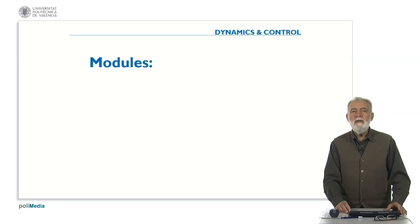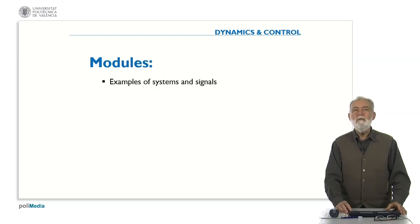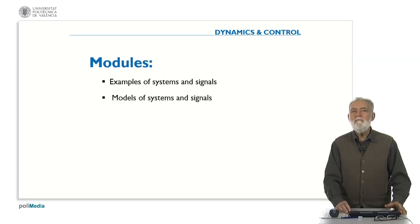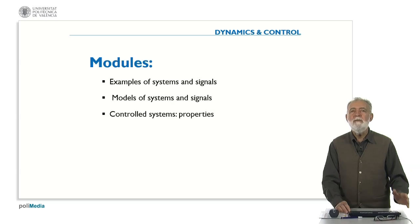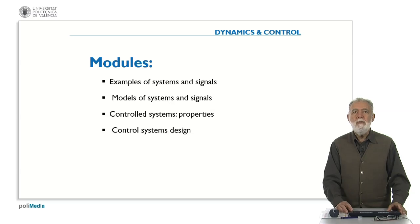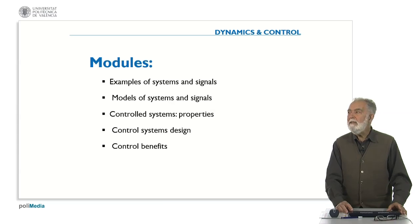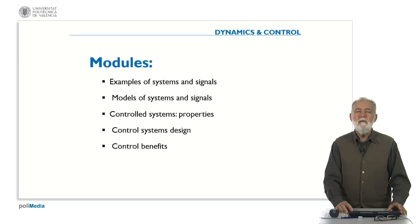The course is divided in six modules, and we are going to deal with systems and signals. We will develop some models to deal with the systems and signals, and in particular we will be interested in a special kind of systems — the control systems — and we will present their properties and also how we can design these control systems. Then we will realize the benefits of the control and we will finalize this course with some topics to study.